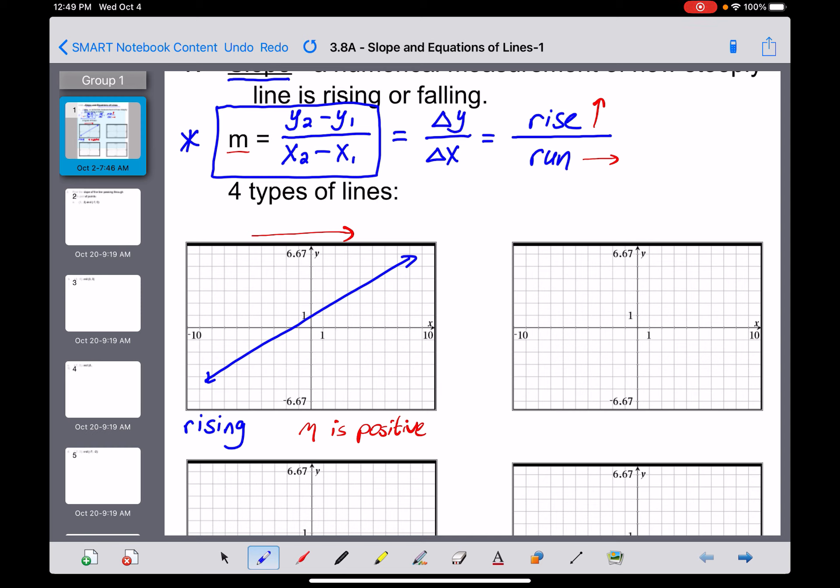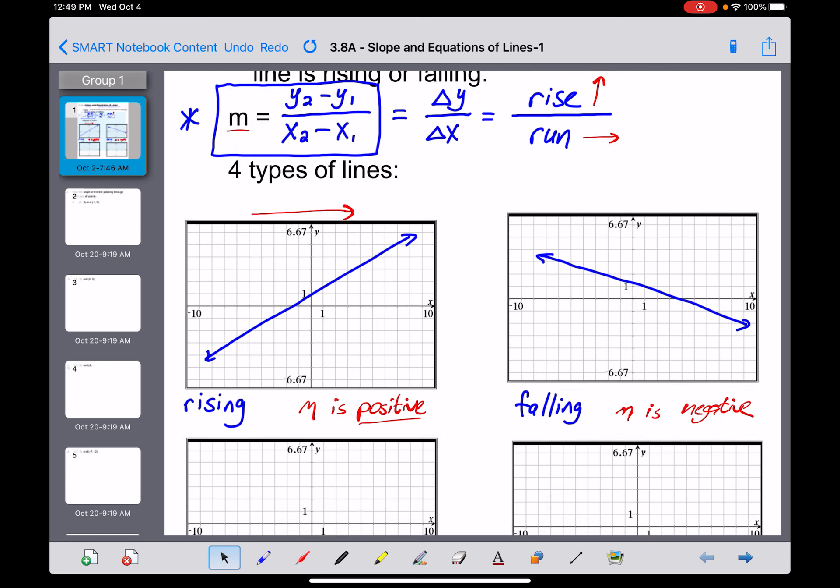So the second type of line would be one that looks maybe something like this. And again, if we read it from left to right, this is a line right here that is falling. Well, if a rising line has a positive slope, stands to reason that a falling line is going to have a slope that is negative. Every falling line from left to right has a slope that's negative.